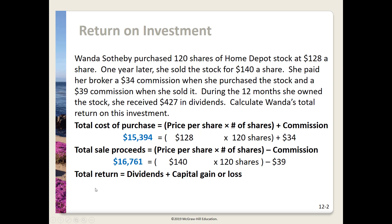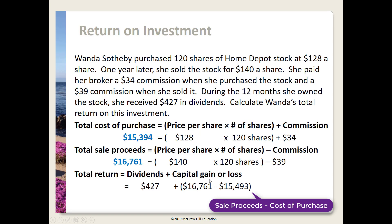In the last formula we're going to find the total return. We'll take the dividends she received — that's the $427 — and add the capital gain or loss. To determine if we have a capital gain or loss, we take the total sale proceeds minus the cost of purchase, which gives us $1,367. When we add that to our dividends, we get $1,794.